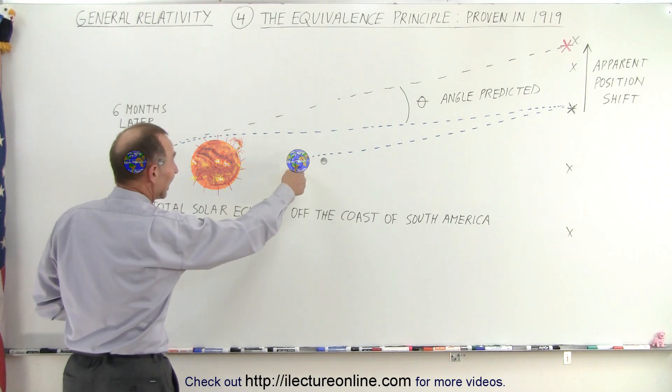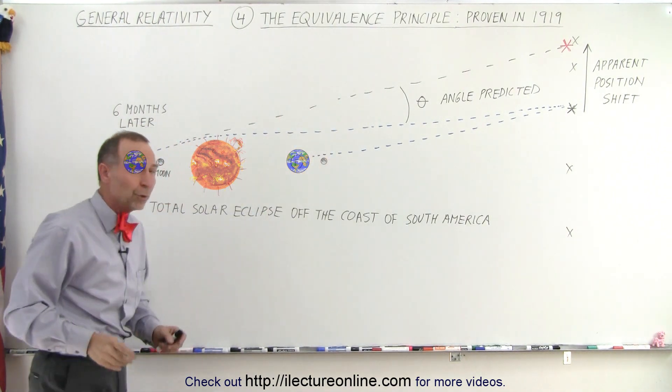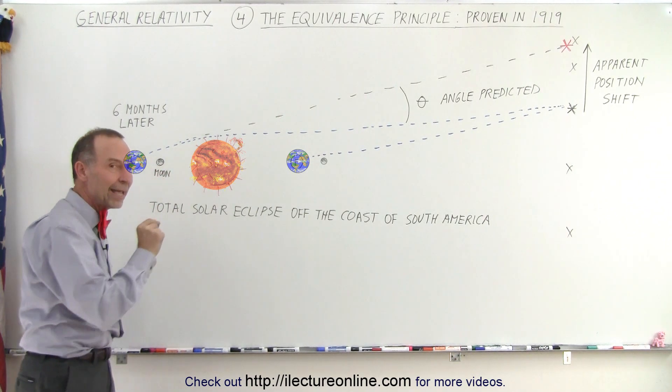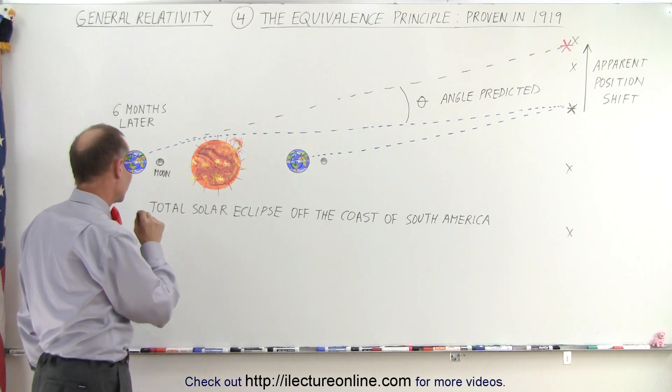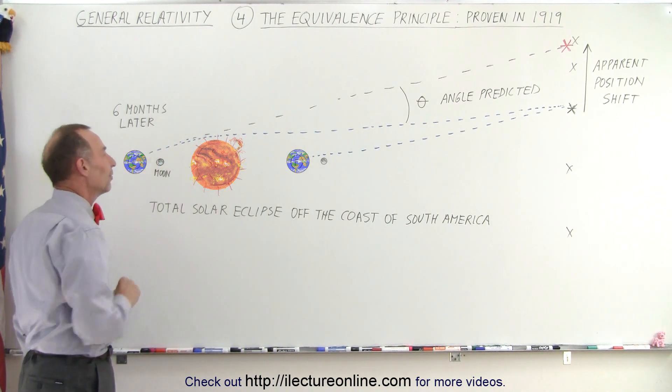Then he said, six months later, when the earth is on the other side of the sun, of course you can't see those stars anymore, unless there's a total solar eclipse. And one day, known ahead of time, at the coast of South America, the moon blocked the light of the sun.